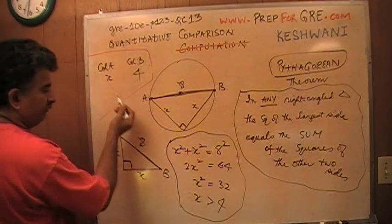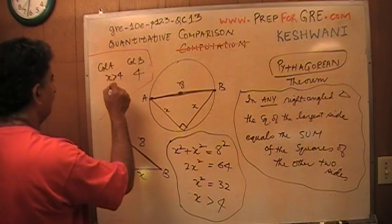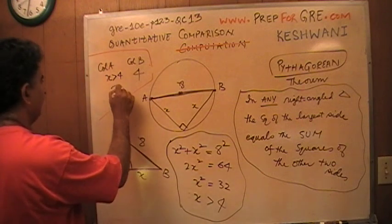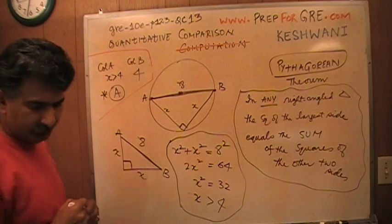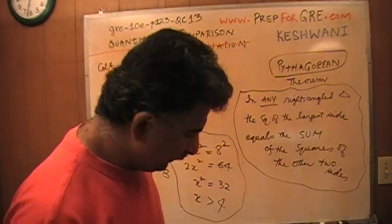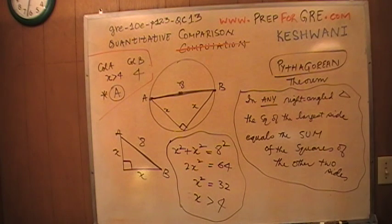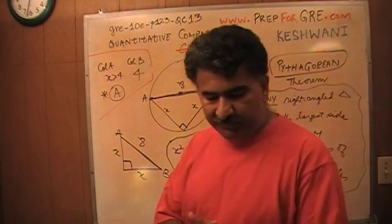So x is more than 4, and that is all I'm interested in, because that's what we are asked to compare here. Hence, this is your x, which we know is more than 4, because x² is 32. Therefore, the answer is A. That's what it is. I hope you found this helpful.